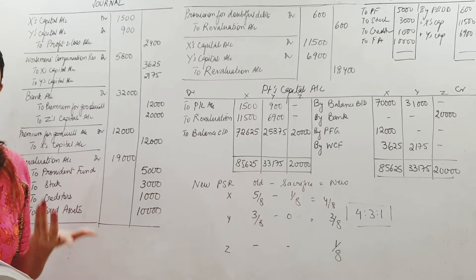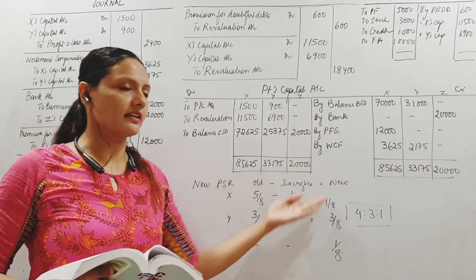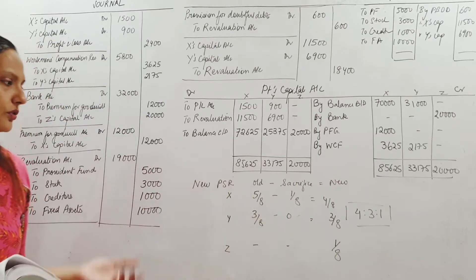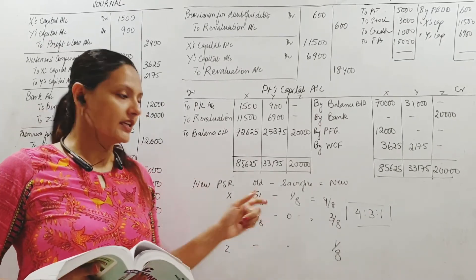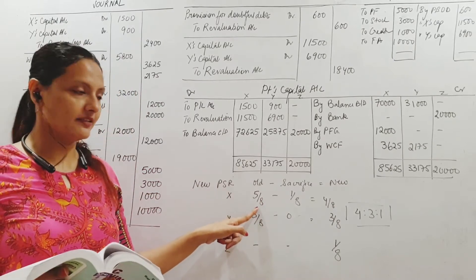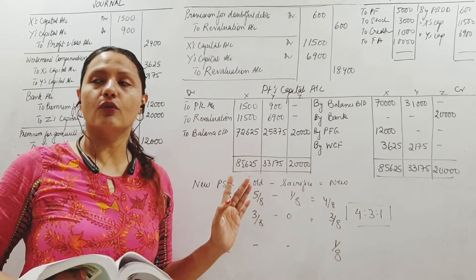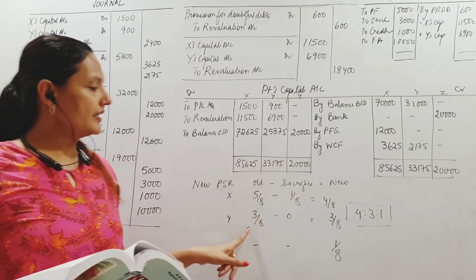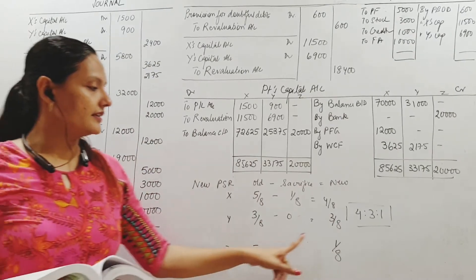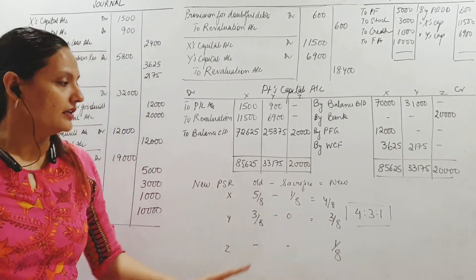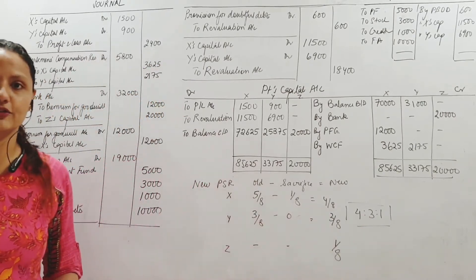New profit sharing ratio: old ratio minus the sacrifice gives the new ratio. Z is getting 1/8 share, which he is taking entirely from X. X's old share was 5/8 minus 1/8 leaves 4/8. Y is not sacrificing anything, so his share is intact at 3/8. Z has 1/8. So the new ratio is 4:3:1.